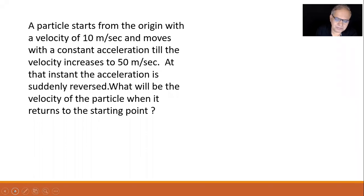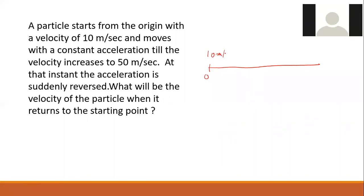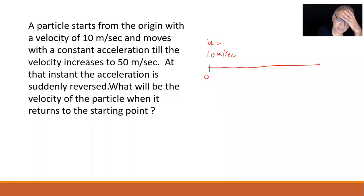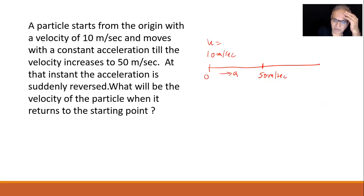Next problem: a particle starts from the origin with velocity 10 m/s and accelerates until it reaches 50 m/s, at which point the acceleration reverses direction. Find the velocity when the particle returns to the starting point.